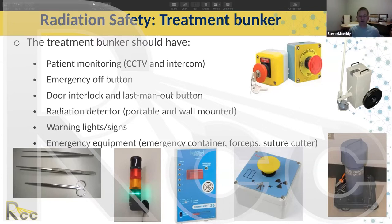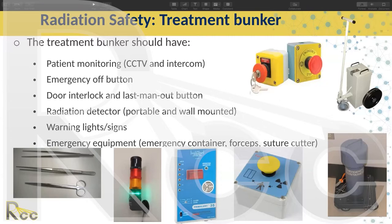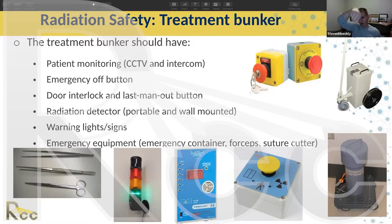For emergency equipment, you want to have an emergency container — we call it a 'pig' in the United States — which is essentially a lead container. You want forceps and a suture cutter. Some people choose long tongs, some shorter forceps. We go for the shorter set because we feel we'd be more adept at grabbing the source wire quickly with them.